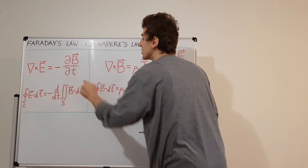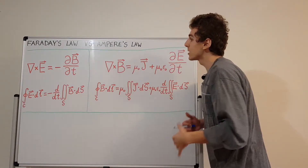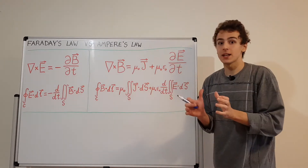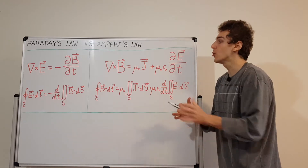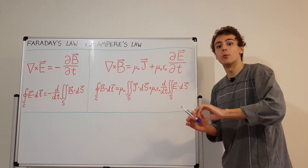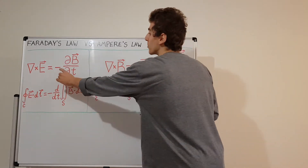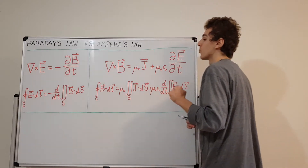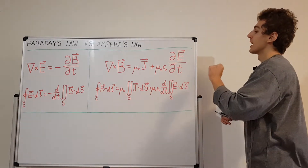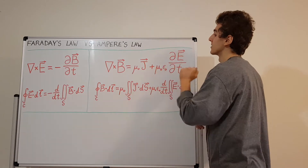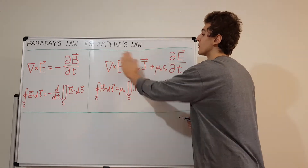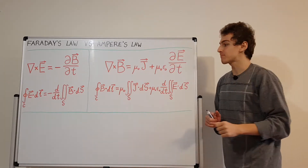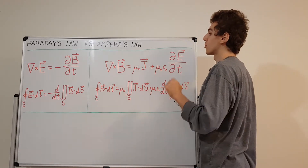This negative sign is summarized as a qualitative statement sometimes called Lenz's law. It says that the circulation of an electric field is going to oppose the change in the magnetic field — it produces circulation that counters that change. Whereas for changing electric fields, there is no negative sign, so the circulation of a magnetic field is in the same direction as the change. This is an important observation.